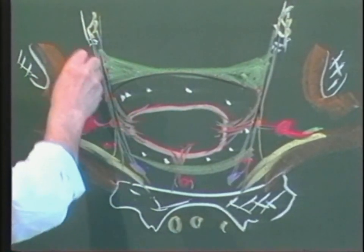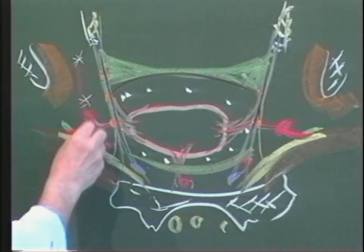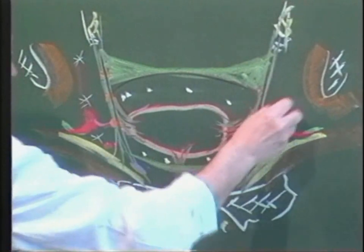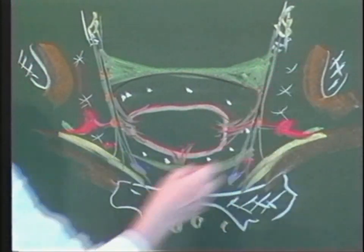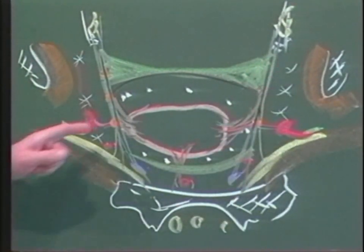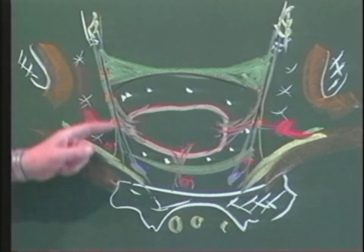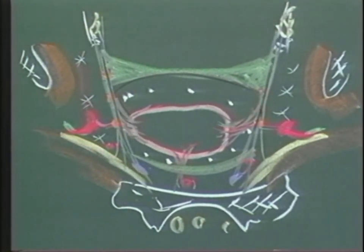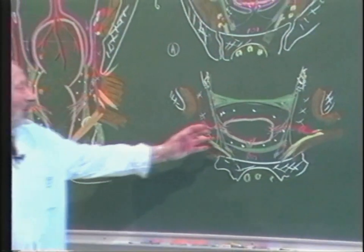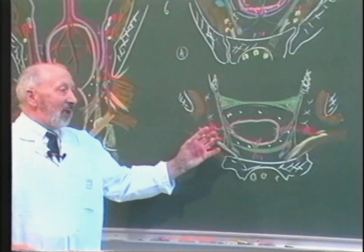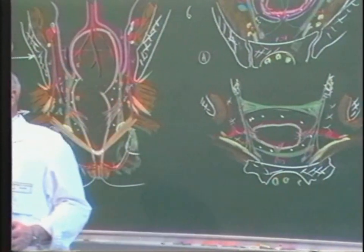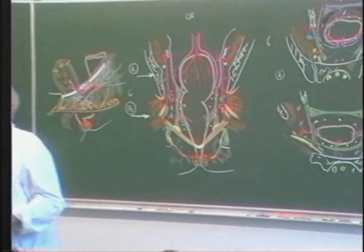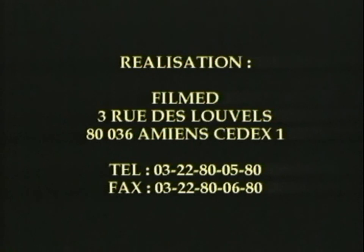La loge péri-rectale est bien distincte de la loge para-rectale et de l'espace pelvis sous-péritonéal. Le mésorectum qui intéresse le chirurgien est ce tissu conjonctif séparant ces deux loges, et lorsque le carcinome a envahi les loges latérales, il serait vain de vouloir y rechercher le nerf érecteur de Descartes.